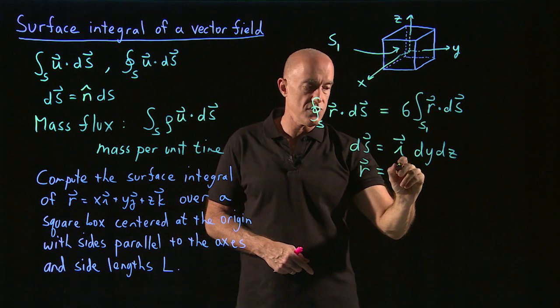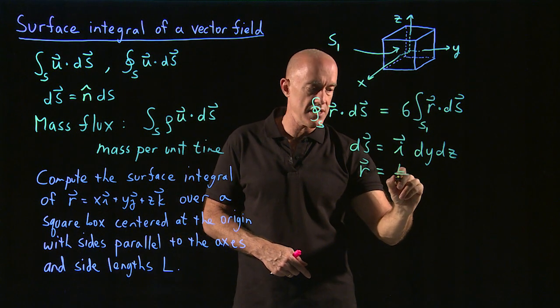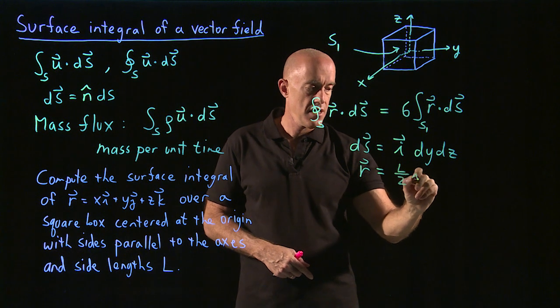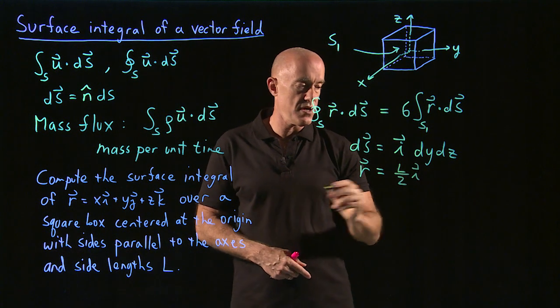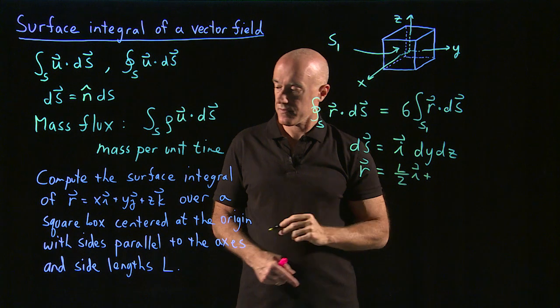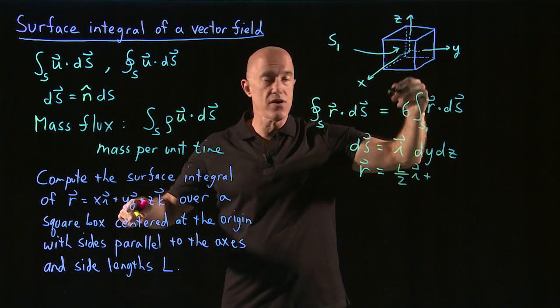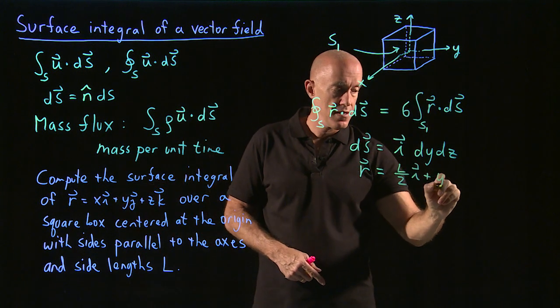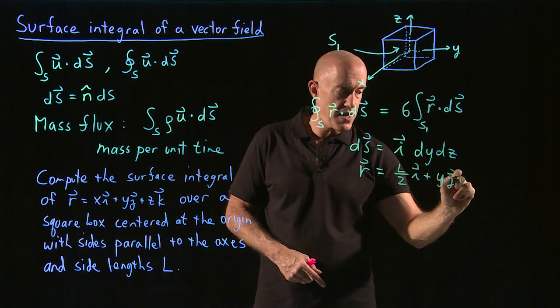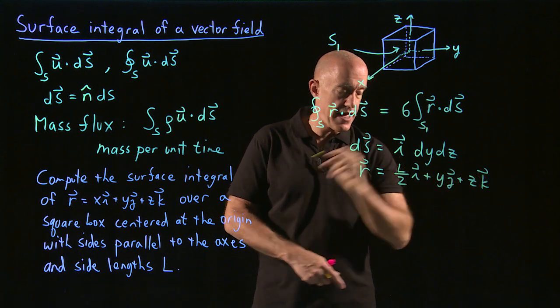The length is going to be L over 2. So the x position is L over 2, i for the coordinate, plus y will vary then.